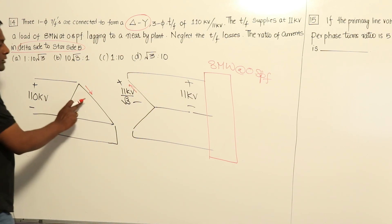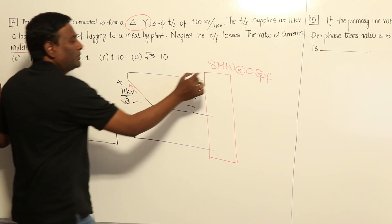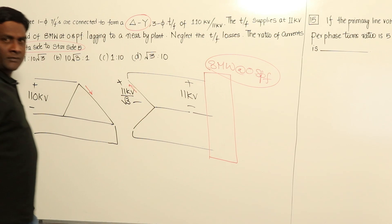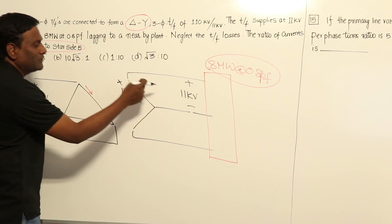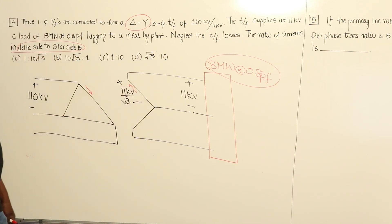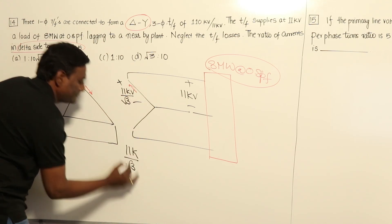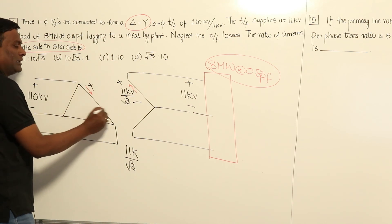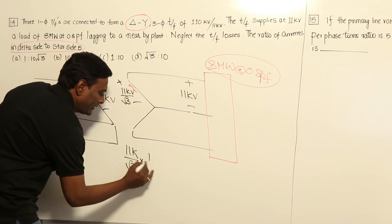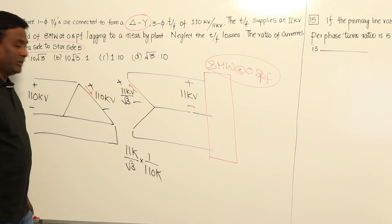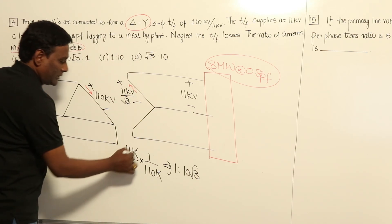Delta to star currents are equivalent to star to delta voltages. All the load data is not required here. The star to delta voltage ratio is (11 kV / √3) divided by 110 kV, because in delta connection the per-phase voltage equals the line voltage, so the delta side voltage is 110 kV.